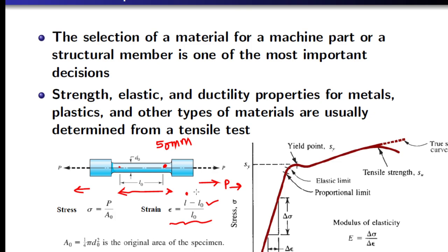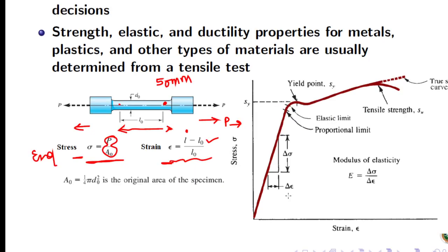At each point we measure the load applied — initially zero, gradually increasing. At each state, the load divided by the cross-sectional area (the initial area) gives the stress. The stress and strain calculated this way are called engineering stress and engineering strain, because we are using the initial length as well as the initial cross-sectional area.